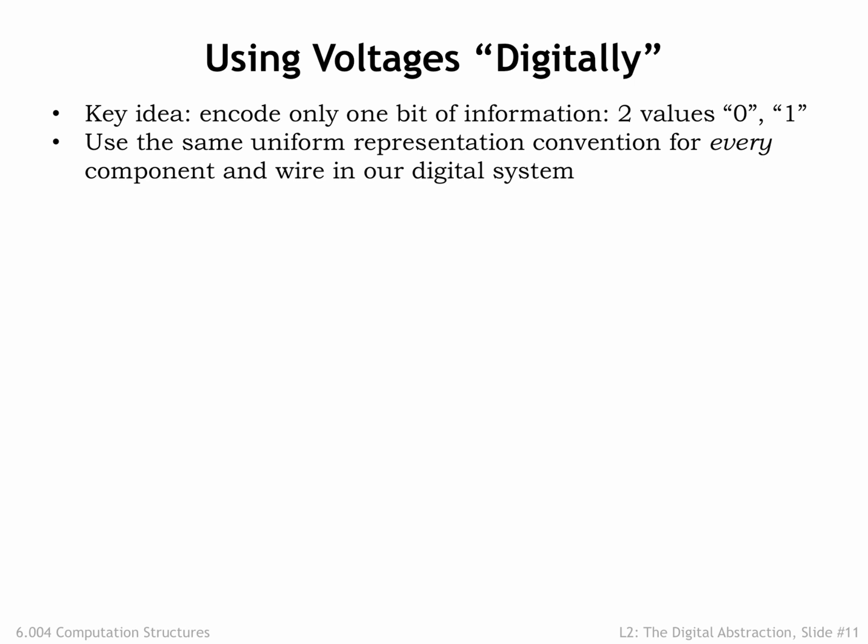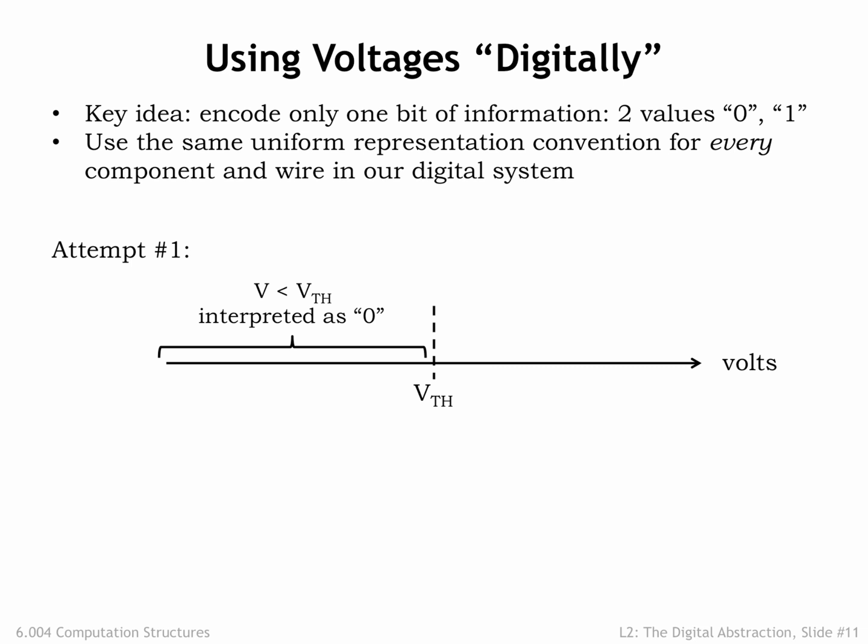It'll take us three attempts to arrive at a voltage representation that solves all the problems. Our first cut is the obvious one: simply divide the range of voltages into two sub-ranges, one range to represent 0 and the other to represent 1. Pick some threshold voltage V_th to divide the range in two. When a voltage V is less than the threshold voltage, we'll take it to represent a bit value of 0. When a voltage V is greater than or equal to the threshold voltage, it will represent a bit value of 1. This representation assigns a digital value to all possible voltages.